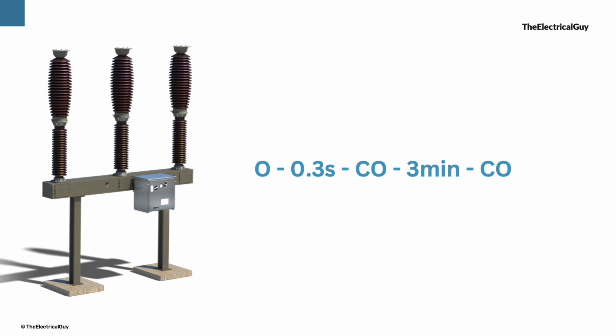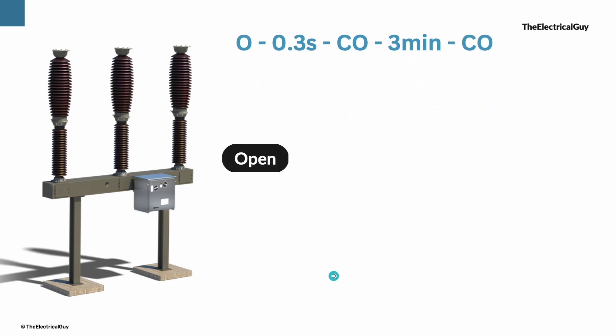So let us break down this cycle to understand. Please note, O represents an opening operation and C represents closing operation of a circuit breaker. Let us say there is a transient fault. Protective relay gives command to circuit breaker and it opens, and that's the first O.